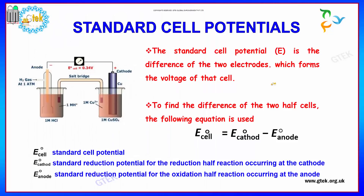The Standard Cell Potential is the difference of the two electrode potentials which form the voltage of that cell. To find the difference of the two half-cells, we use E°cell, where the cell potential equals the potential of the cathode minus the potential of the anode: E°cell = E°cathode − E°anode. E°cathode is the Standard Reduction Potential for the reduction reaction occurring at the cathode, and the anode term represents the reaction happening at the anode.